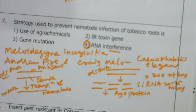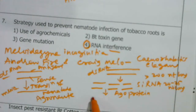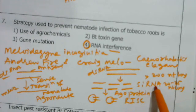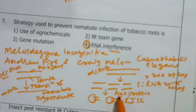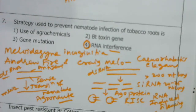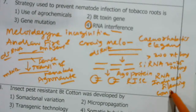This siRNA combines with a protein called Argonaute protein to produce RISC — RNA Induced Silencing Complex. The siRNA combines with Argonaute protein to form RISC, which is the RNA Induced Silencing Complex.